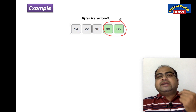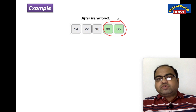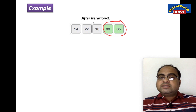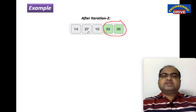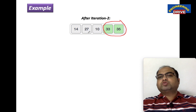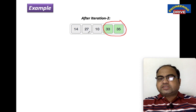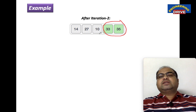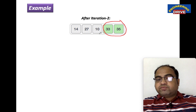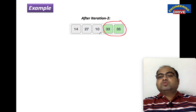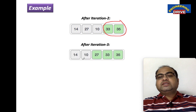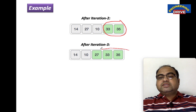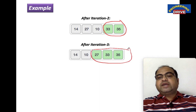In iteration 3, how many numbers do we need to compare? Three numbers. 14 is less than 27 — condition true, no swap, no exchange. 27 is less than 10 — condition false, so we swap. After iteration 3 we get: 14, 10, 27, 33, 35. This is the sub-list after iteration 3.